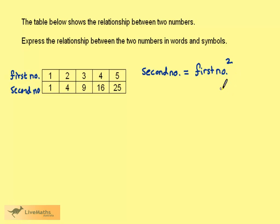We can do better than the word equation. Using F for the first number and S for the second number we can write S is equal to F squared. Remember F squared means F times F.